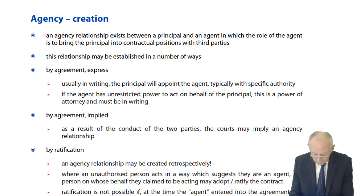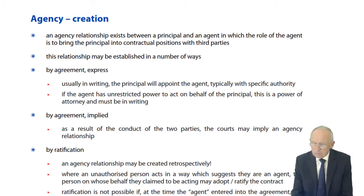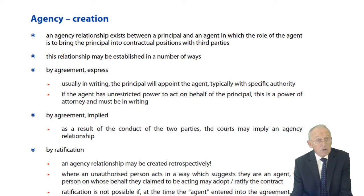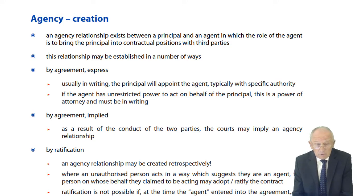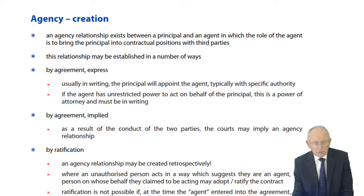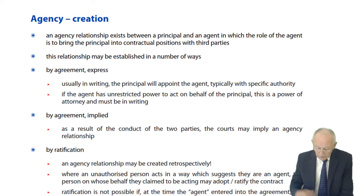So in this lecture we're going to be looking at the creation of agencies — that's where we're going to start. Then we're going to be looking at the authority of agents, the different types of authority and how that authority is derived. Then towards the end, we're looking very quickly at the termination of the agency relationship. And finally, very briefly, the potential liability of agents.